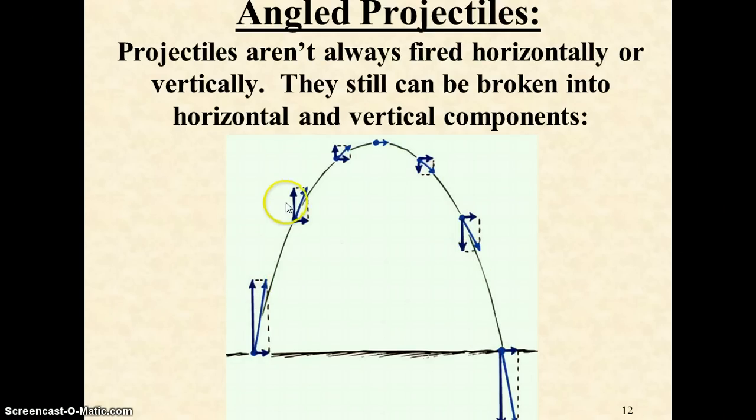If you only looked at the vertical piece, this would be the same as if you threw an object directly up into the air, hit its top spot, and came straight back down. The only difference with this projectile is it happens to be moving forward at the same time.